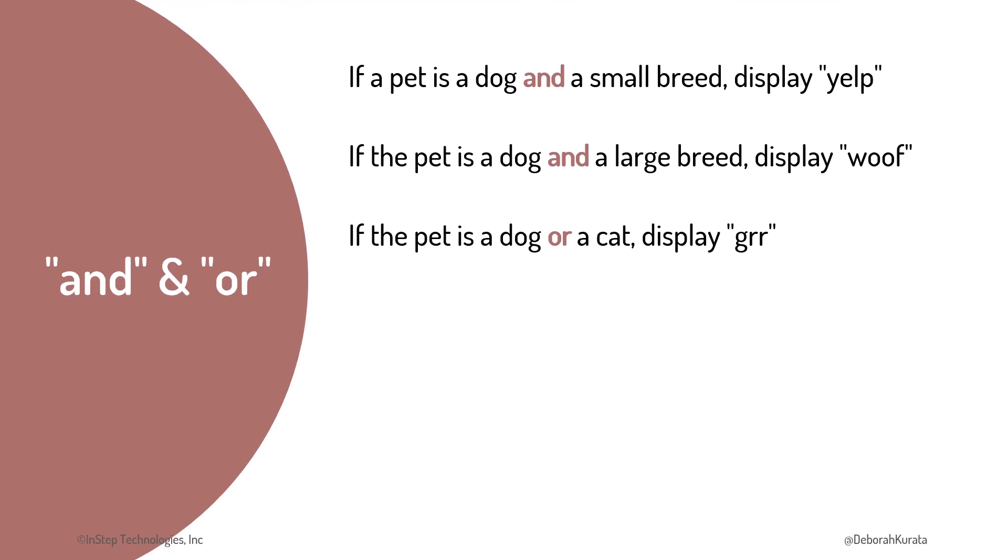I feel like I'm reading a children's book here. Okay, let's keep going. We use and if we want all factors to be true. Pet is a dog and a small breed. And use or if we want at least one of the factors to be true. Pet is a dog or a cat.